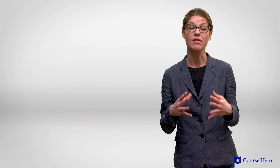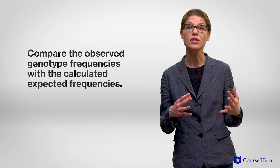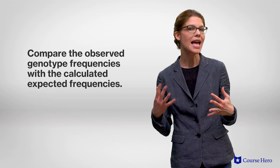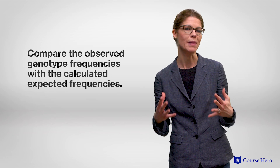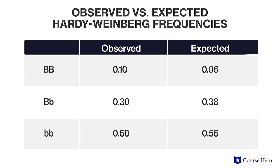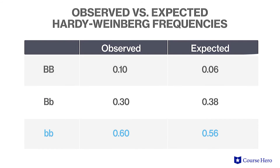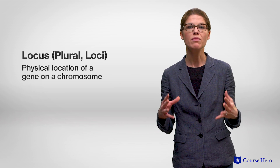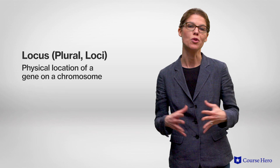The last thing left to do is compare the observed genotype frequencies with the calculated expected frequencies. The values observed in this case are close but not the same, which means the population is not in Hardy-Weinberg equilibrium. From this, we can conclude that some evolution is happening at this locus.